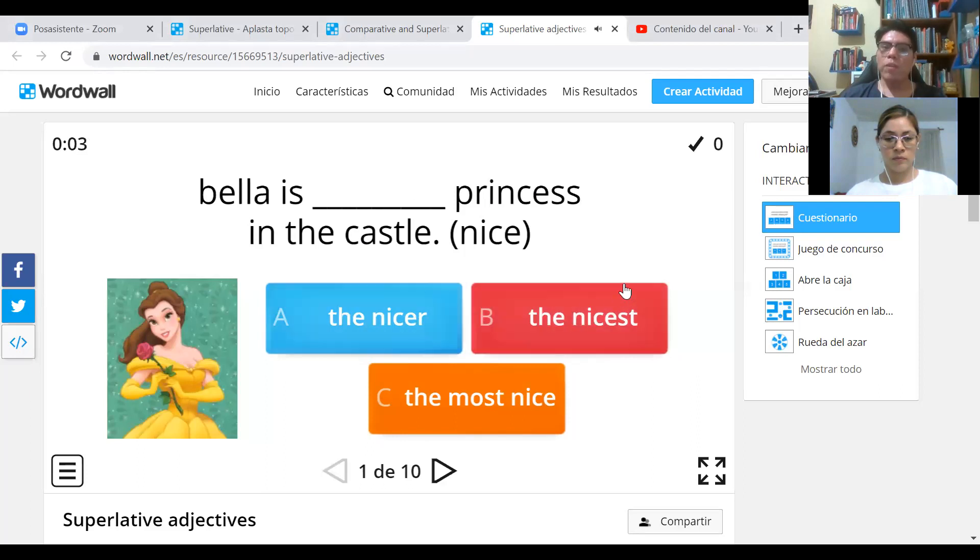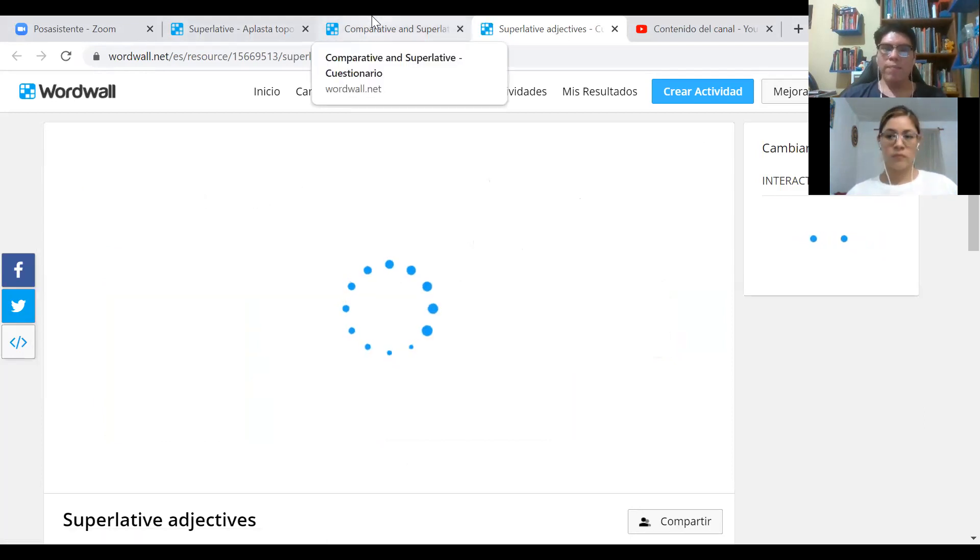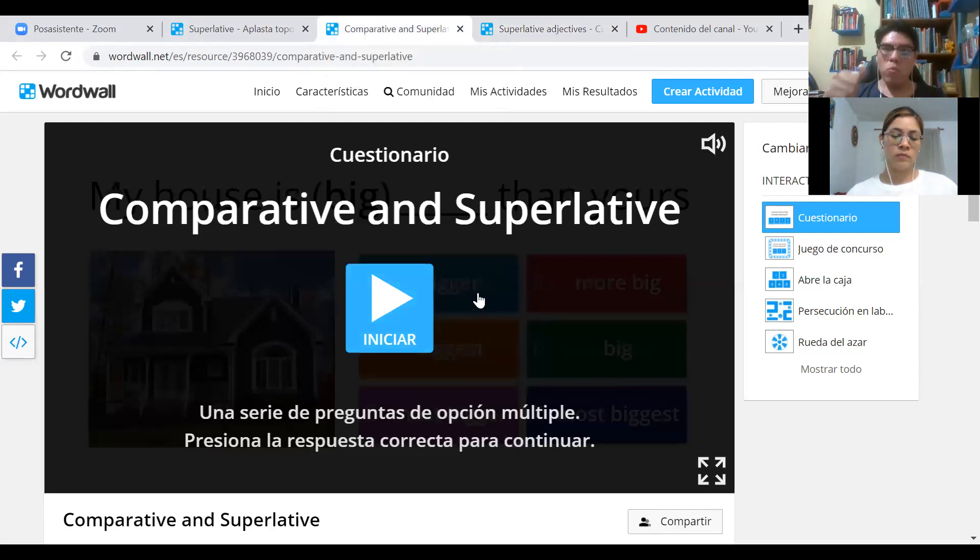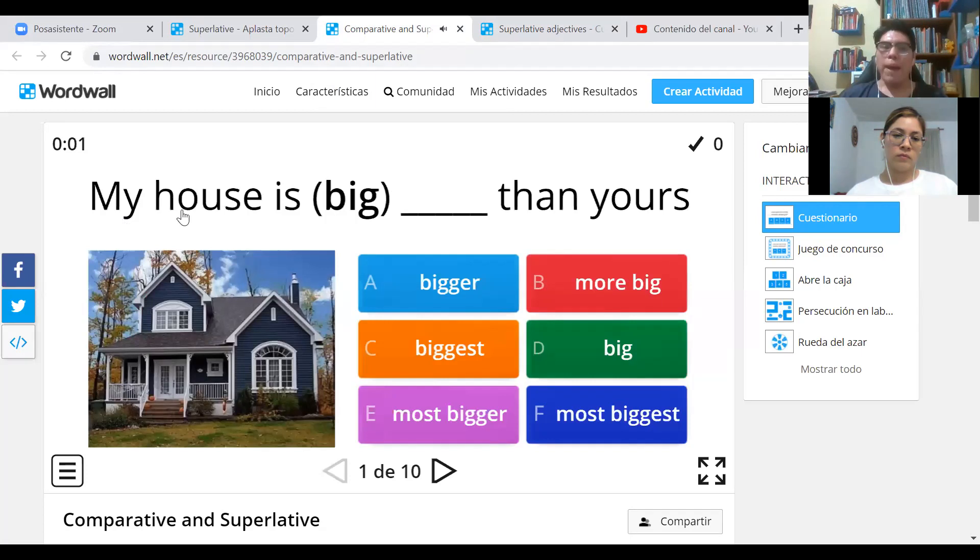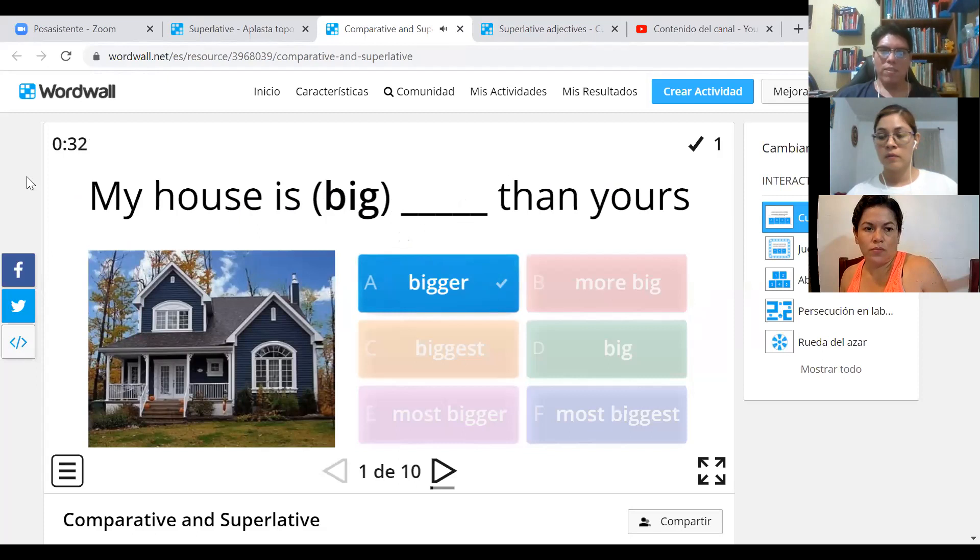In the first exercise you are going to complete with the superlative. You have options here, right? Just with superlative. Then in the second game I want you to choose between comparative or superlative. Remember that comparative is for two things and superlative is for three or more things. For example, my house is, this is the adjective I'm going to use, than yours. What do you think we need? Do we need a superlative or a comparative? Comparative, exactly, because I am comparing my house with your house. So what would be the option? Bigger, exactly, good.